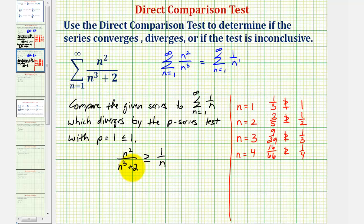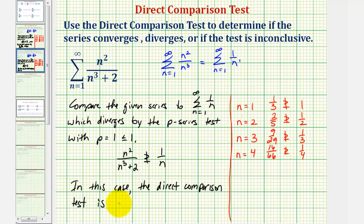So we're not able to show that the given series diverges when comparing to this series. This does not mean that the series doesn't diverge or that it converges — it just means that when comparing to this diverging series, the direct comparison test is inconclusive. In fact this series does diverge, but to show this we'll have to either use the direct comparison test with a different series, or as we'll show in the next lesson, we can use the limit comparison test. I hope you found this helpful.